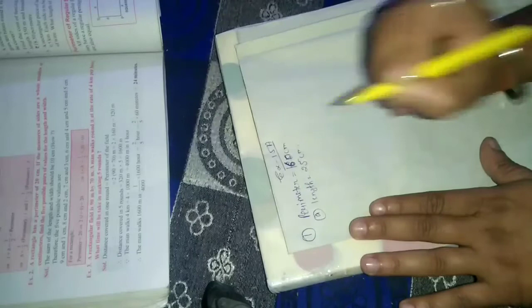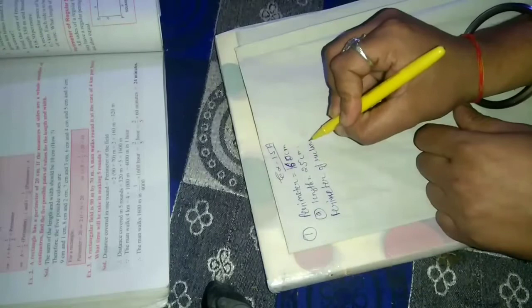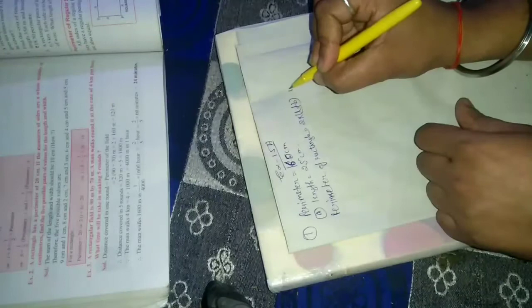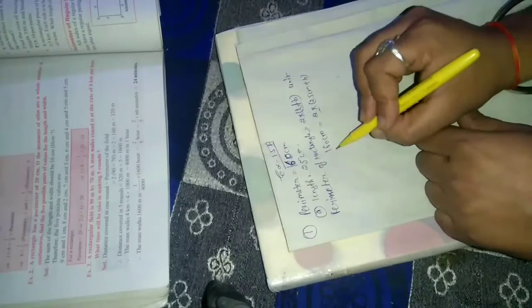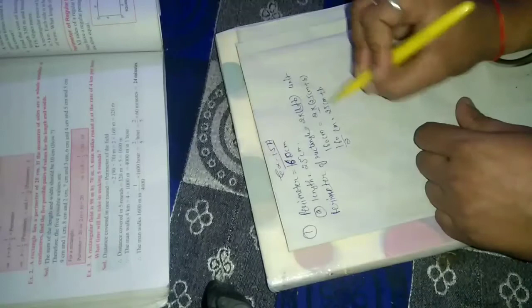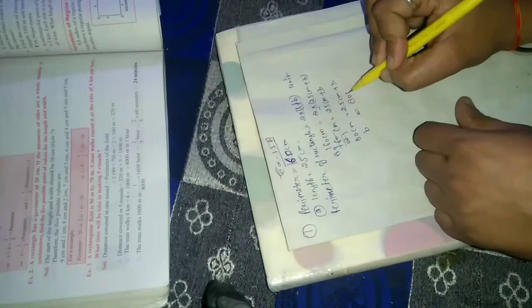Length 25. Perimeter of rectangle, what is the formula? Perimeter of rectangle equal to 2 into length plus breadth. In this rectangle, perimeter 160 cm, length 25 cm, breadth... 2 multiply divide...